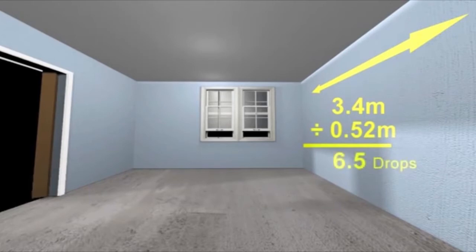This will tell you how many drops that wall will require, in this case 6.5 or 7, to allow for cutting and waste.